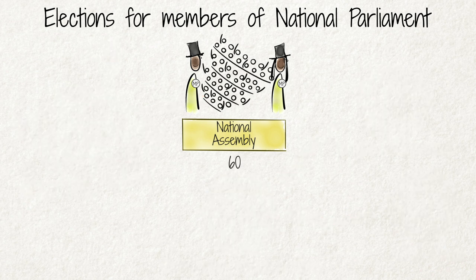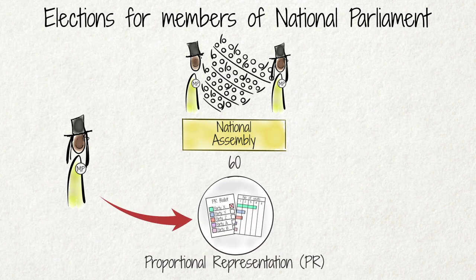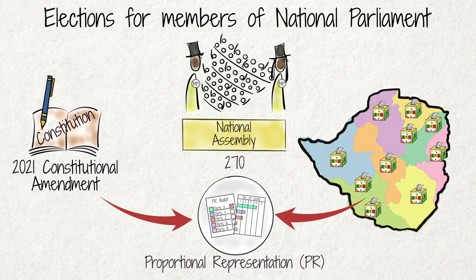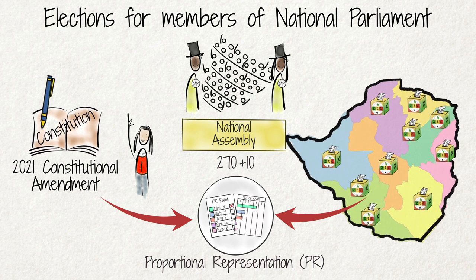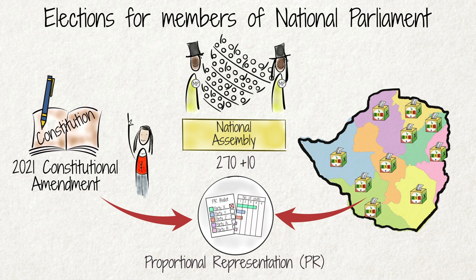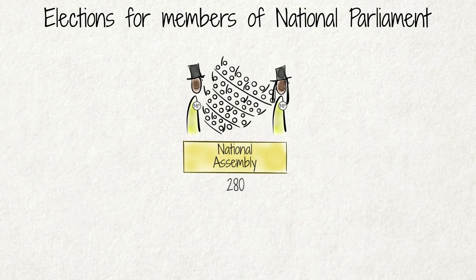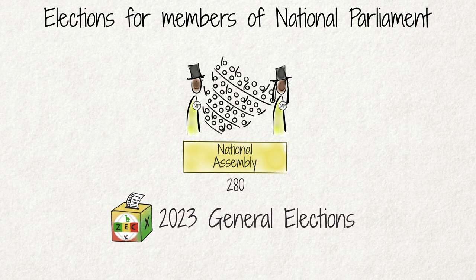The remaining 60 members of the National Assembly must be women, elected under the PR system. The calculation of these seats for each political party is based on the votes that were cast for members of the National Assembly in each of the 10 provinces. The 2021 Constitutional Amendment also makes provision for an additional 10 members of the National Assembly, one from each of the 10 provinces, elected under a PR system. If implemented, the composition of the National Assembly will rise to 280 after the 2023 general elections.